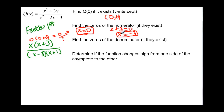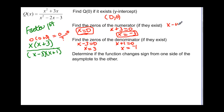Now we want to find the zeros of the denominator. That's going to be x − 3 = 0, which gives us x = 3. And then x + 1 = 0, which gives us x = negative 1. What we found from the numerator zeros were the x-intercepts, and what we found from the denominator zeros are the vertical asymptotes.